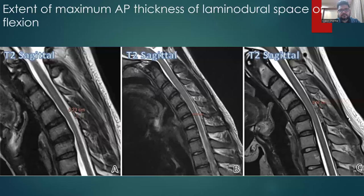The next set of images shows the extent of maximum AP thickness of the laminodural space on flexion. The first image shows mild increase in laminodural space thickness, approximately 0.23 cm. The second image shows moderate increase, approximately 0.41 cm, and the third image shows severe increase in the laminodural space, approximately 0.52 cm.